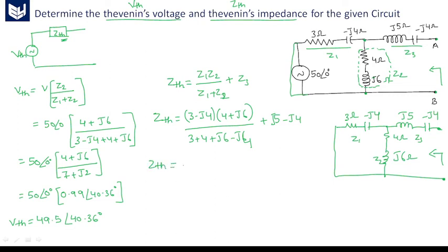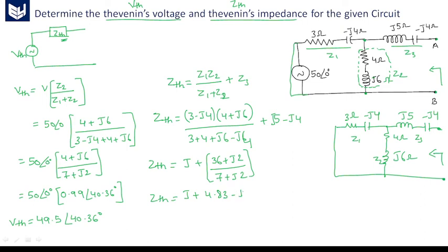Now Zth is equal to j5 minus j4 is j1, plus on simplifying the parallel combination we will get 36 plus j2 divided by 7 plus j2 — since 4 plus 3 is 7 and 6 minus 4 is 2, which gives 7 plus j2. On simplifying this we will get 4.83 minus j1.09.